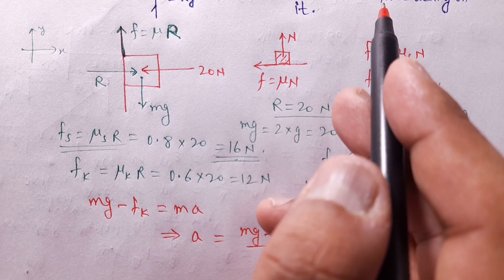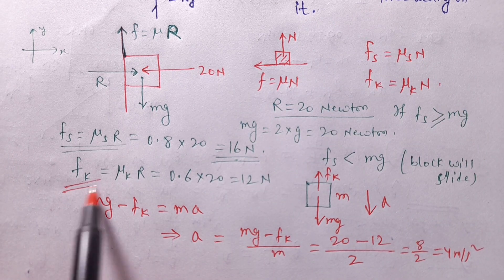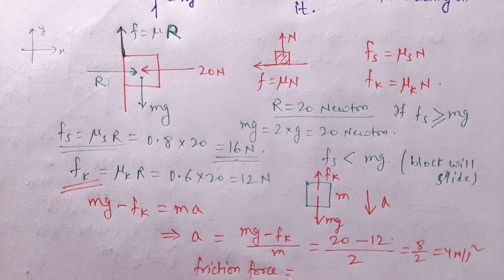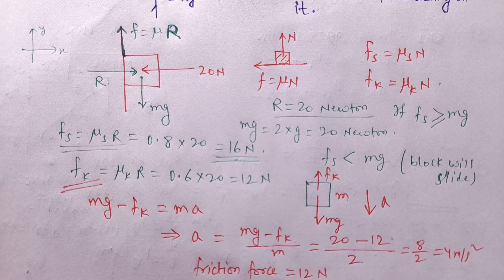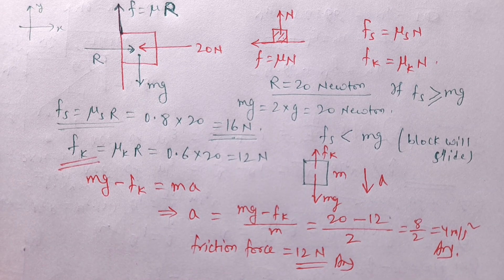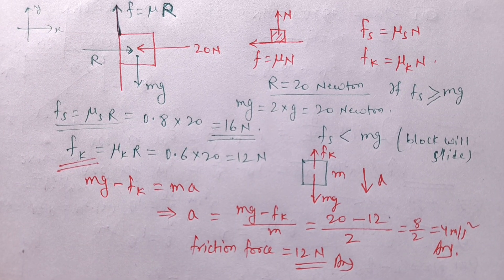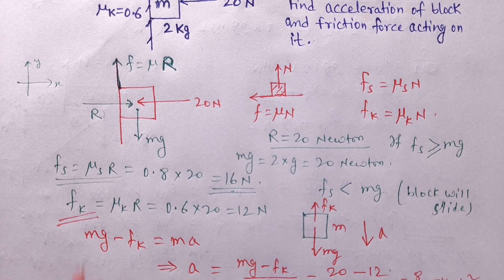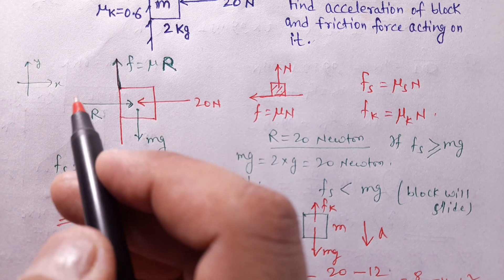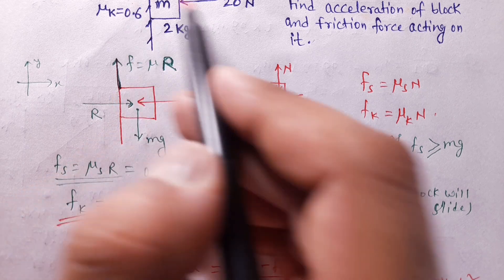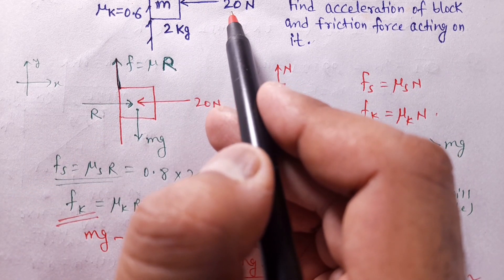So the acceleration of the block is 4 m/s². The friction force — since sliding is occurring — is kinetic friction = 12 Newton. These are the answers. Now let's change μ_static to 0.9: 0.9 × 20 = 18 Newton.